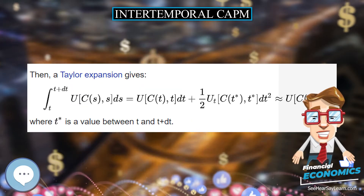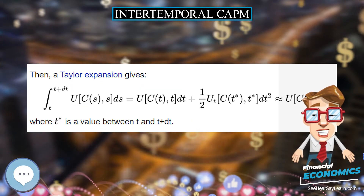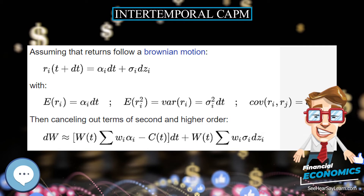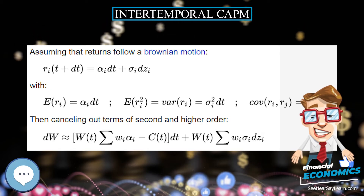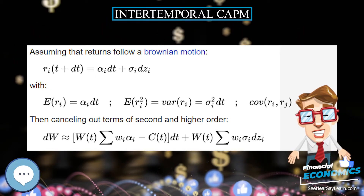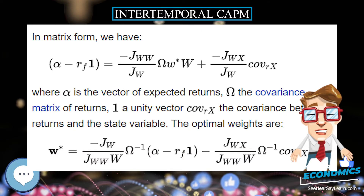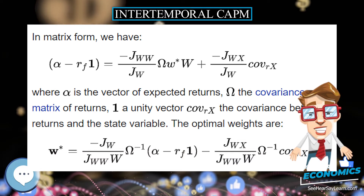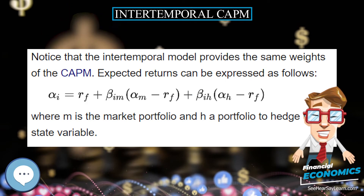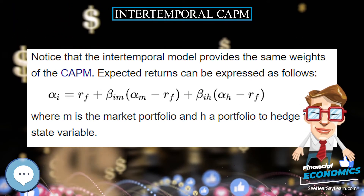In the ICAPM, investors are solving lifetime consumption decisions when faced with more than one uncertainty. The main difference between ICAPM and standard CAPM is the additional state variables that acknowledge the fact that investors hedge against shortfalls in consumption or against changes in the future investment opportunity set.